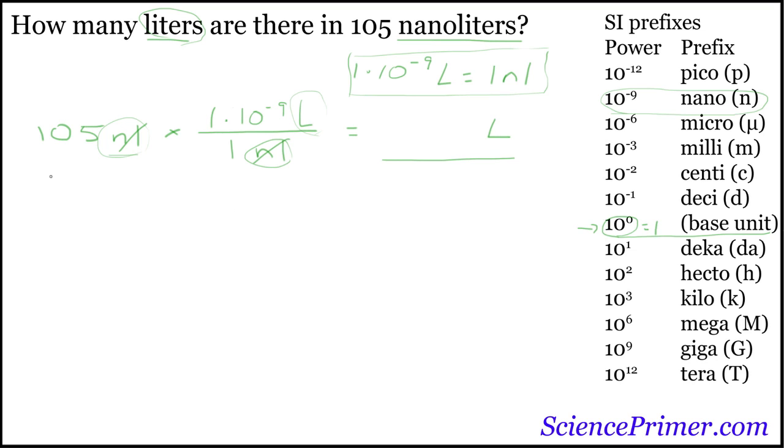Then what we need to do is multiply 105 by 1 times 10 to the negative 9. Pull out a calculator and check this yourself, but the answer will be 1.05 times 10 to the negative 7.